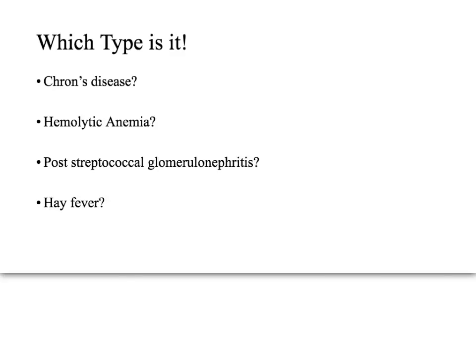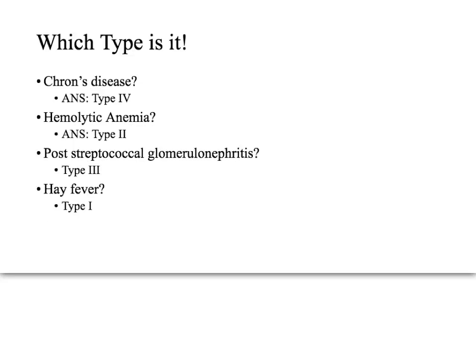Final question — four in one: What type of hypersensitivity is each of the following? Crohn's disease, hemolytic anemia, post-streptococcal glomerulonephritis, and hay fever. After 30 seconds, the answers are: type 4, type 2, type 3, and type 1 respectively.